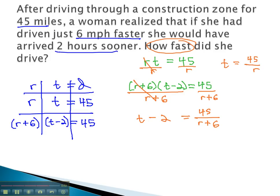We can now bring the two equations together by making a substitution, and replacing time in the second equation with the 45 over r. When we do this, we get 45 over r minus 2 equals 45 over r plus 6. We now have a rational equation that we could go through and solve.